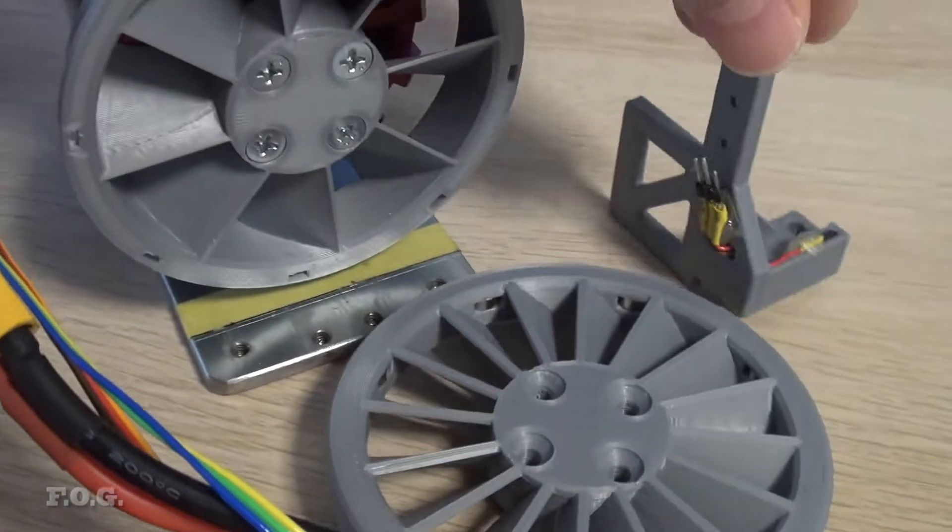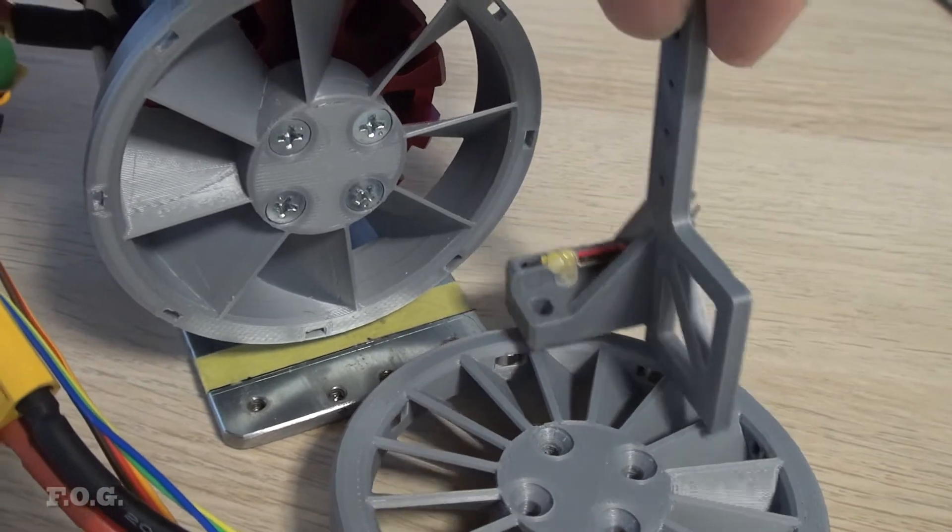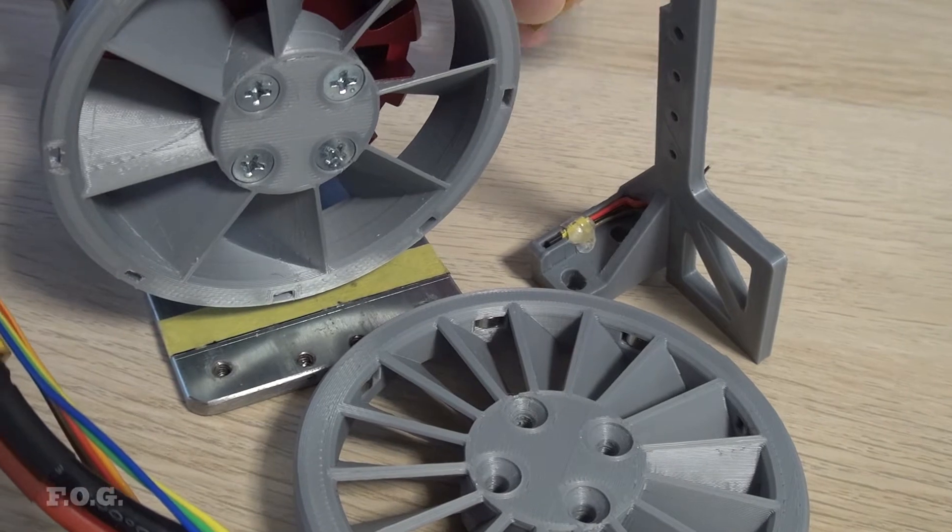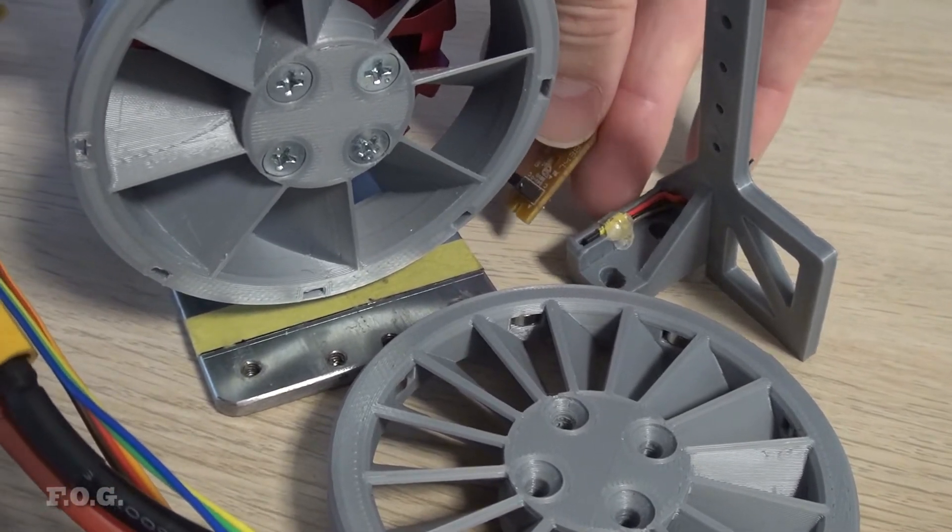So I'm just going to print a new mount here. This mount that mounts the ESC and the Hall Effect and one, but I'll print a new one that will accommodate this sensor so that it locates it right here.